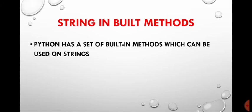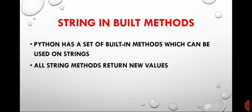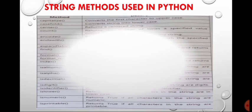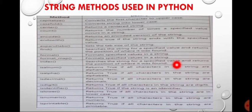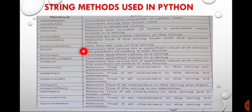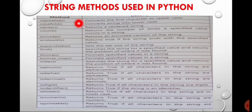Let us move towards string inbuilt methods. Python has a set of inbuilt methods which can be used on strings. All string methods return new values; they do not change the original string. Some string methods are directly available in Python and can be used directly.